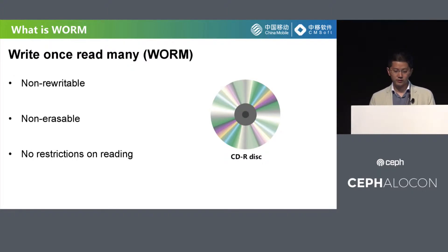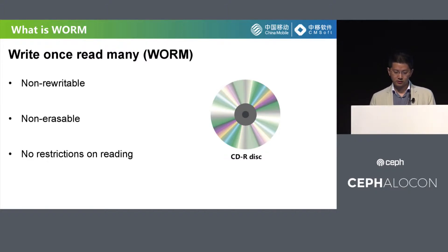What is WORM? WORM is short for write-once read-many. It describes a data storage device in which information, once written, cannot be modified. The simple explanation is that it's immutable storage. You can write data to the storage device or media precisely one time. After that, no one can change the data in any way. A simple version of WORM storage is a CD-R disk. You can write data to the blank disk and then it's stuck that way forever. We can damage or destroy the disk to deny someone access to it, but we can't change the data that's already stored on CDs.